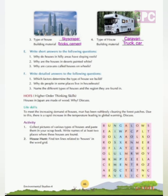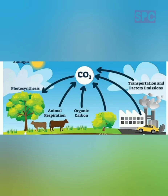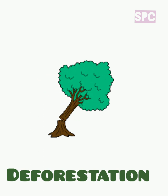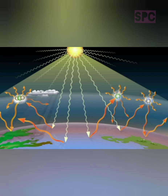Life skills: To meet the increasing demand of houses, man has been ruthlessly clearing forest patches. Due to this, there is a rapid increase in temperature leading to global warming. Forests serve as a carbon sink by absorbing atmospheric carbon dioxide during photosynthesis. Deforestation results in a decreased number of trees leading to accumulation of carbon dioxide in the atmosphere, which traps heat rays reflected by the earth, resulting in global warming.